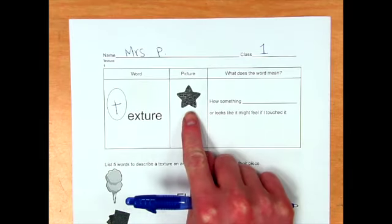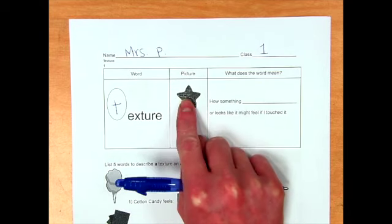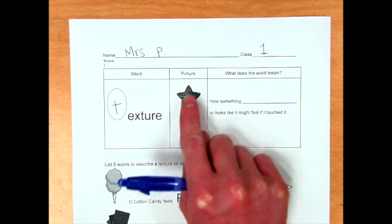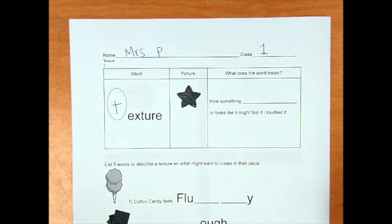Then I created a picture right here for you of a star that has a texture on it. Now, if I just touch it with my finger, it feels smooth, but it looks like it would feel bumpy, maybe like alligator skin.